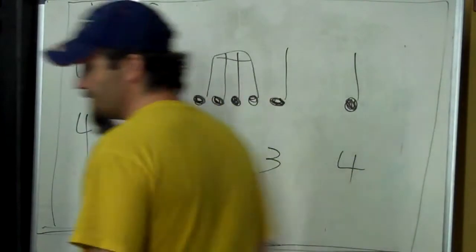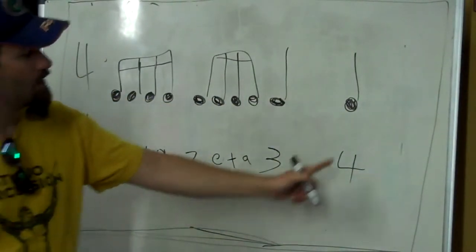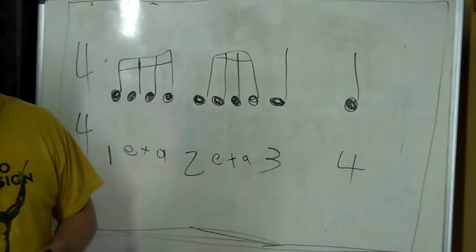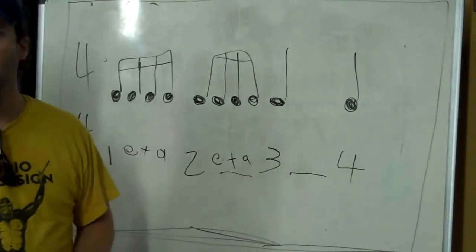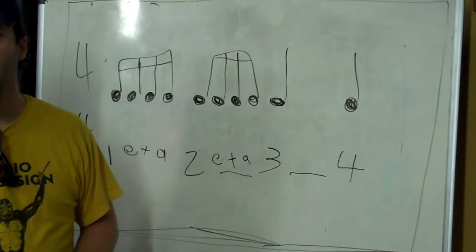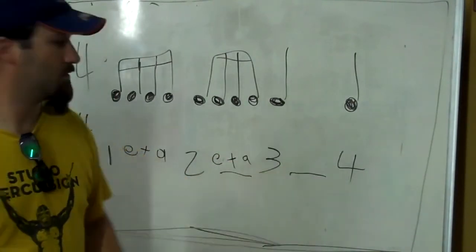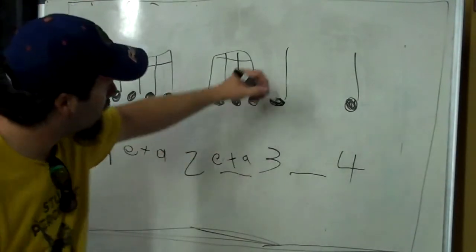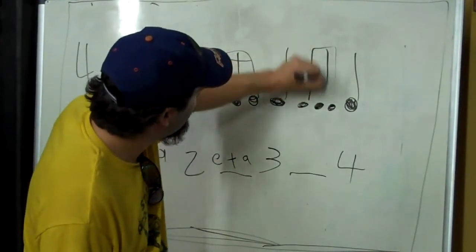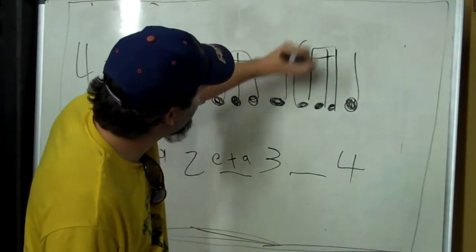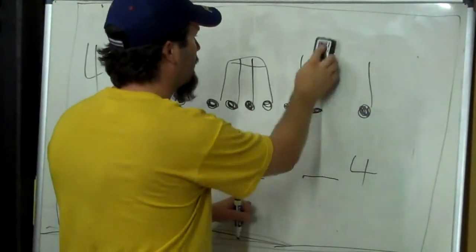Okay, so what you have here, check it out. One, E, and a. Two, E, and a. Three, four. This E and a part — is it in here? It is, but you count it, but you don't play it. Yeah, we're not playing it, but it's in there in the space. It's definitely in there. You can put it in parentheses. It's in there, but we're not playing it, and we don't even really need to count it.